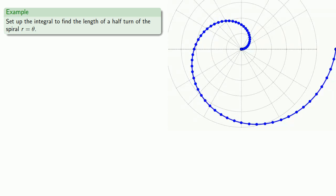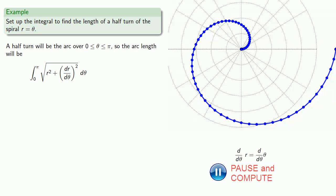Now if we want a half turn, that's going to be the arc over the interval from 0 to π. So we'll set up our arc length integral. We need dr/dθ. So since r equals θ, we'll differentiate.